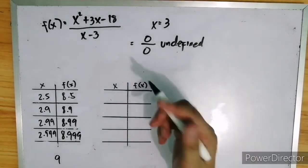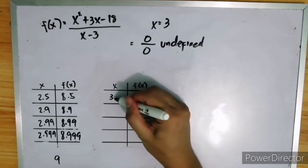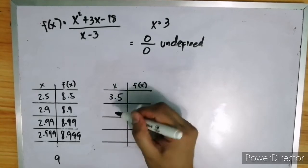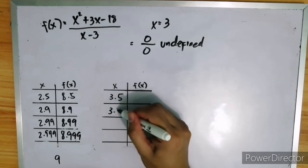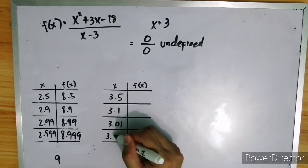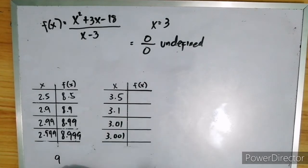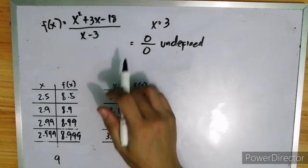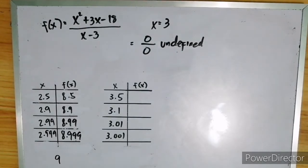So let us use 3.5, 3.1, 3.01, and 3.001. Again, use your calculator to evaluate these values of x. So, let us try.